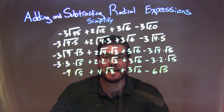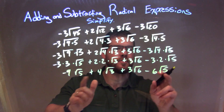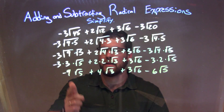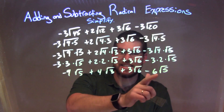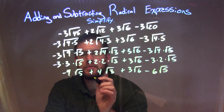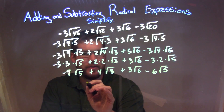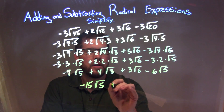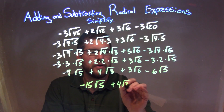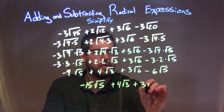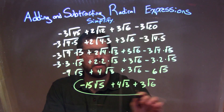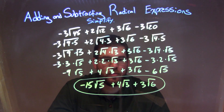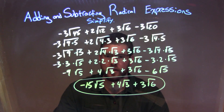Now I'm going to look to see which ones I can combine. I have a square root of 5 here and a square root of 5 — those are the only ones with the same square root — so I'm looking at that negative 9 minus 6, which comes out to be negative 15. So we have negative 15 square root of 5, plus 4 square root of 3, plus 3 square root of 6, and there we have it. Our final answer is negative 15 square root of 5 plus 4 square root of 3 plus 3 square root of 6.